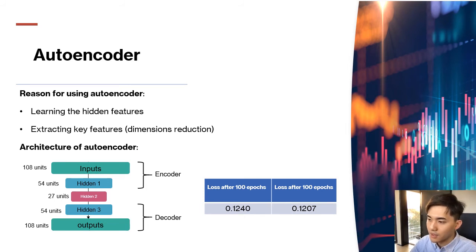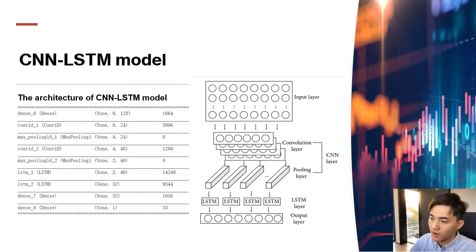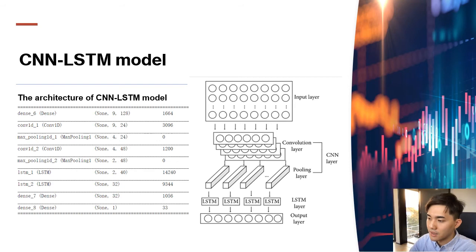For the autoencoder, we have 108 units in the input encoder layer and the coding dimension is 27. The architecture is symmetric. Due to the addition of an L1 regularizer, the risk of overfitting is decreased, allowing 100 epochs with a final loss of around 0.1. For the CNN-LSTM model architecture, we apply 1D and 2D convolutional layers for feature extraction, with a max pooling layer after each convolution layer to avoid overfitting. The output of the CNN layer becomes the input of two LSTM layers, and finally two dense layers output the final prediction.